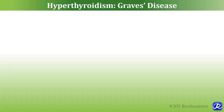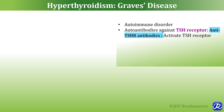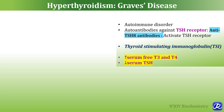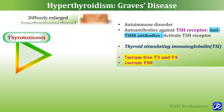Graves disease is the most common cause of hyperthyroidism. It is an autoimmune disorder where autoantibodies are formed against the TSH receptor — called anti-TSH receptor antibodies. These antibodies activate the TSH receptor, leading to increased synthesis and secretion of thyroid hormones. These are thyroid-stimulating immunoglobulins (TSI). Graves disease is thus characterized by increased thyroid hormone and decreased TSH, and presents with thyrotoxicosis and diffuse hyperfunctioning thyroid.